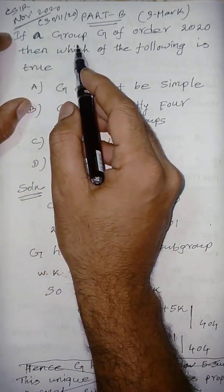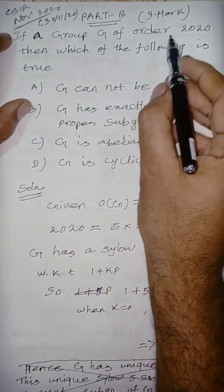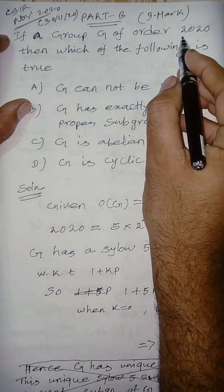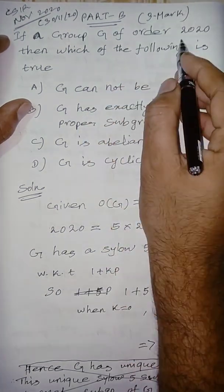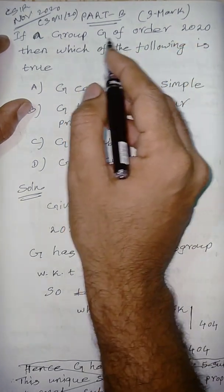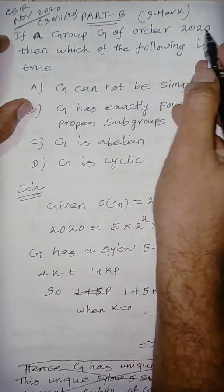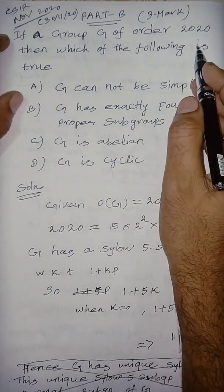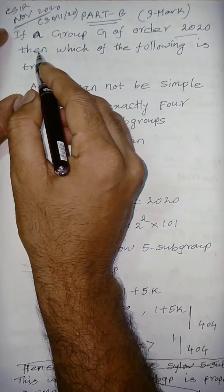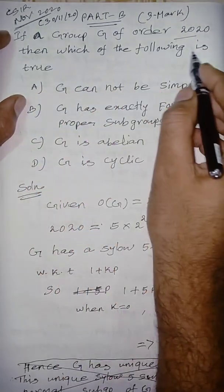If a group G of order 2020 - so this is the beauty of this question because this year is 2020, and the question is asking the group of order 2020. That is the wonder of this question. Then which of the following is true?